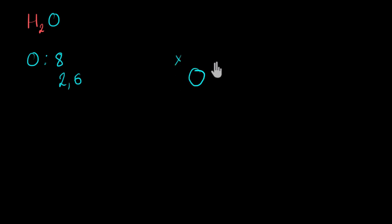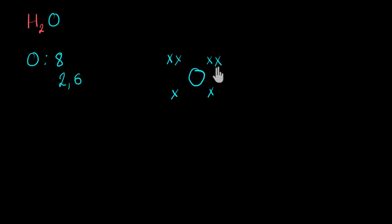I'm going to represent the electrons with crosses — one, two, three, four, five, six. We only draw the outermost electrons because in a chemical reaction, only the outermost electrons of an atom participate, so there's no need to draw the inner electrons.